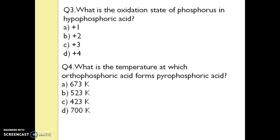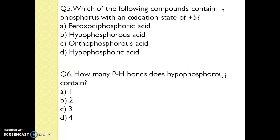Q3. What is the oxidation state of phosphorus in hypophosphoric acid? The answer is D, plus 4. Q4. What is the temperature at which orthophosphoric acid forms pyrophosphoric acid? The temperature is 523 Kelvin. Q5. Which of the following compounds contains phosphorus with an oxidation state of plus 5? The answer is peroxodiphosphoric acid.